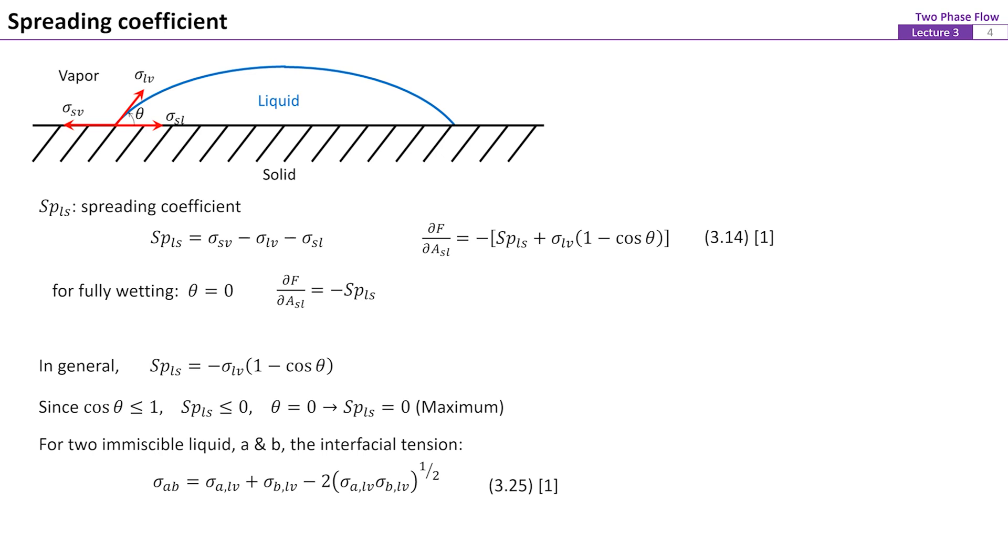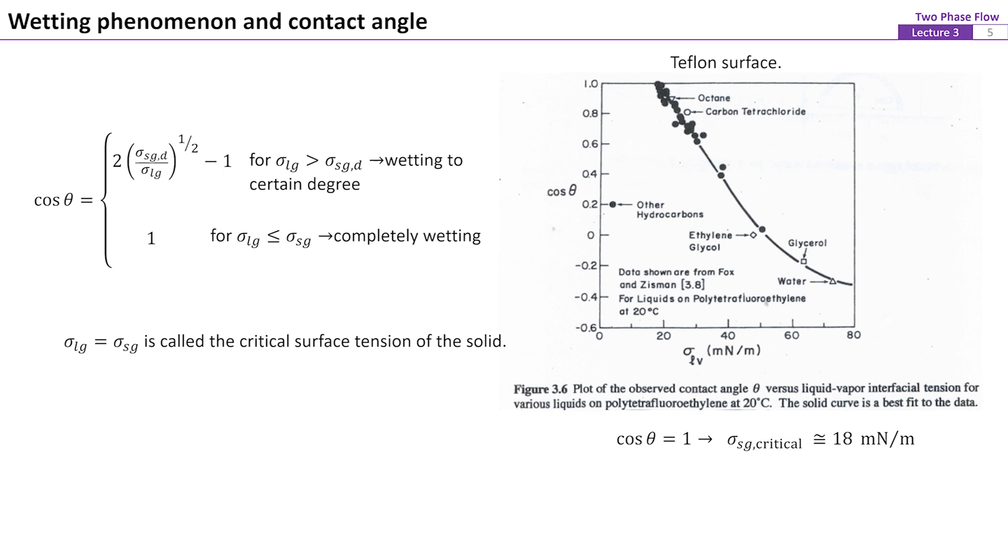Equation 25 is a useful correlation for determining the interfacial tension of two immiscible liquids. Following these discussions, the contact angle can be presented with this set of equations here. Note that for sigma lg less than sigma sgd, cosine theta must be 1.